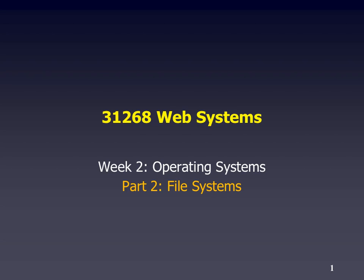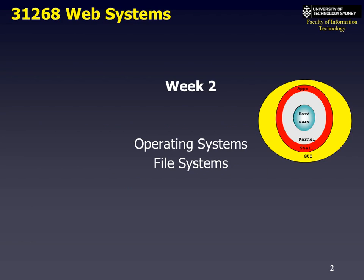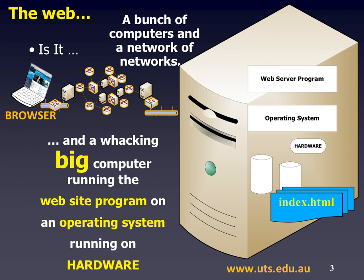Web Systems Week 2, Operating Systems Part 2: File Systems. We're going to talk about operating systems and in particular how data is stored in an operating system. We've seen from the previous lectures that the web is in reality a giant distributed computer serving files, and these files are stored in a place called a file system. So let's take a quick look at what this file system concept is.